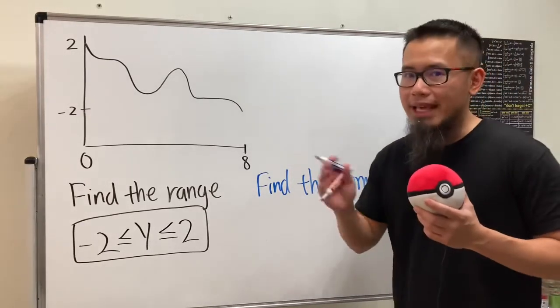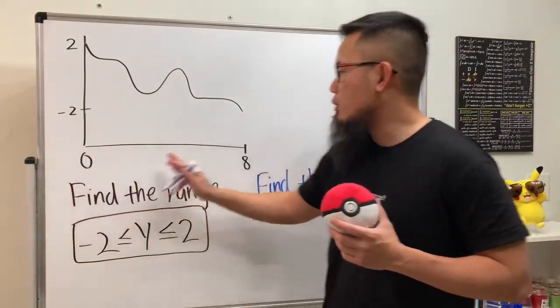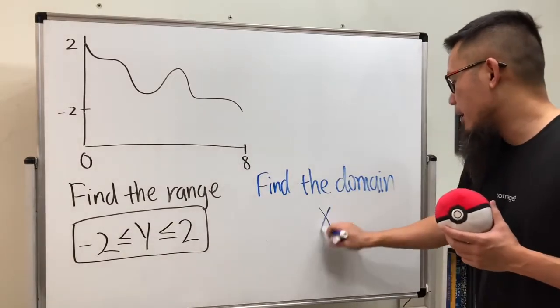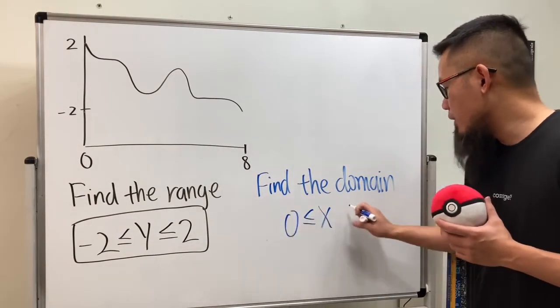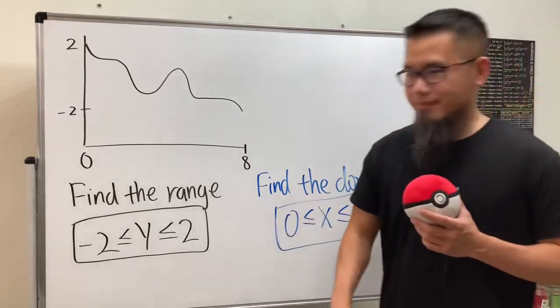In this situation, we're talking about going from 0 to 8. Therefore, the domain will be X is between 0 and 8. That's it.